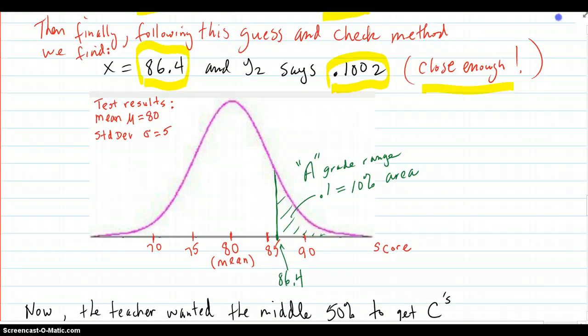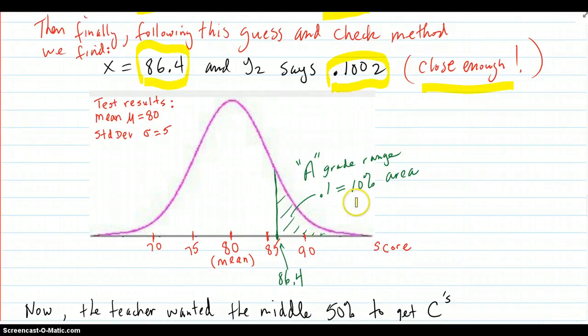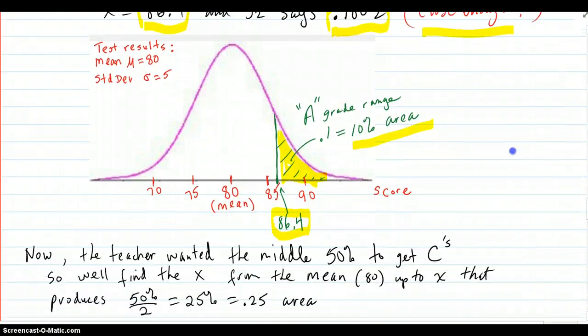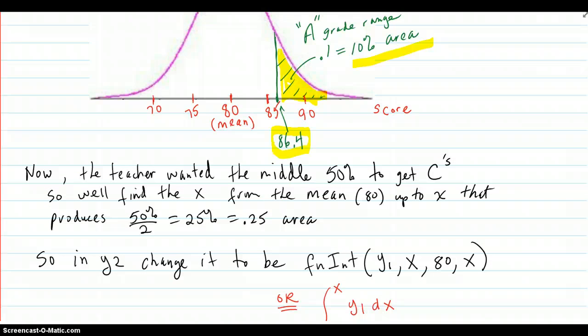So, our cutoff for the A's, the top 10% of scores. The top 10% area, all in here. That's 10%, .1 area right there. Is 86.4 is the cutoff right there. Just beyond one standard deviation above the mean in this distribution. Okay, so that's the method.